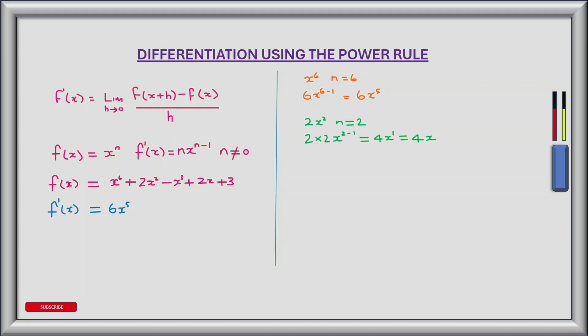Now let's look at the second term 2x squared. n in this case is 2, so we multiply the x term by 2. It's already multiplied by 2, so that becomes 2 times 2 multiplied by x, and we decrement the power by 1, so it's x to the power of 2 minus 1. This equals 4, because we have 2 times 2 multiplied by x to the power of 1, which is just 4x. So currently we have f prime of x equal to 6x to the power of 5 plus 4x.